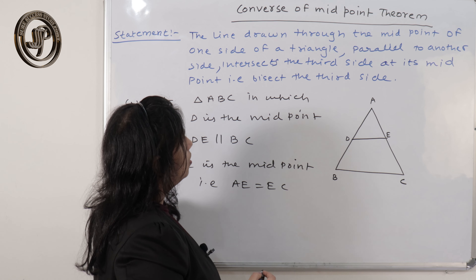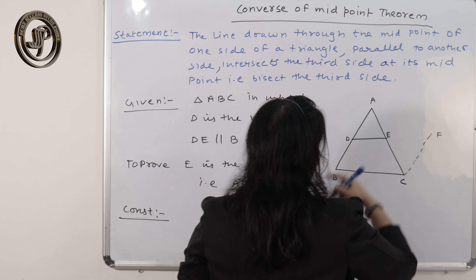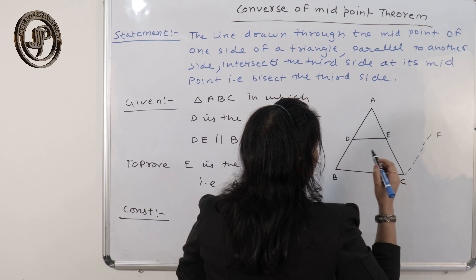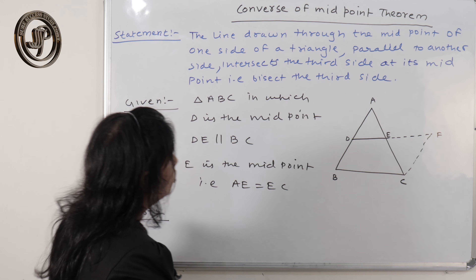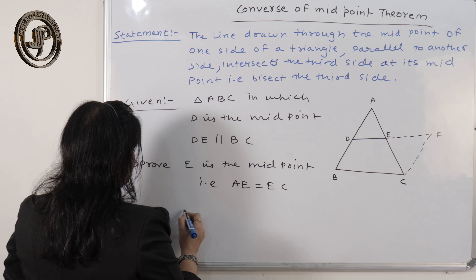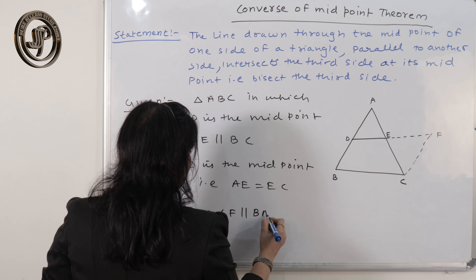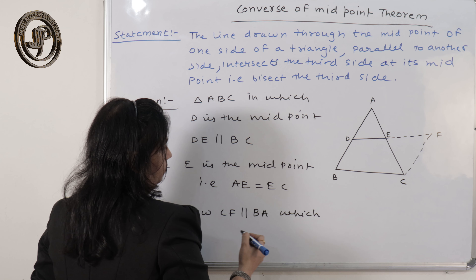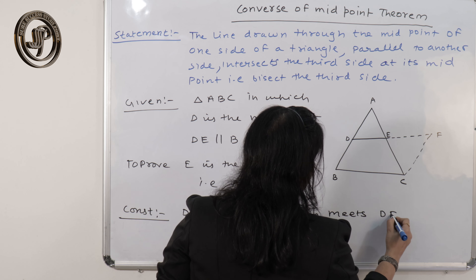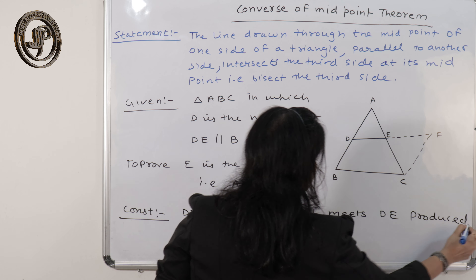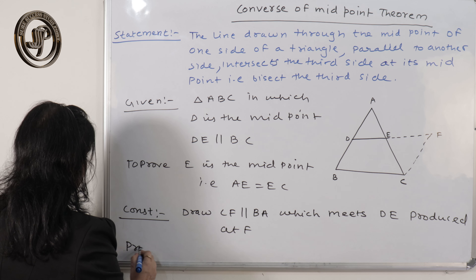In this theorem too, I will do the same construction as the last theorem. Draw CF parallel to BA, which meets DE produced at F.